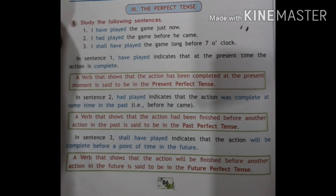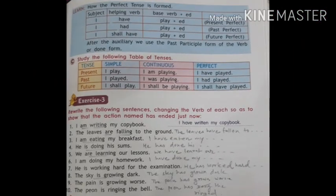Here we talked about the perfect tense in present, past, or future. See page number 87 and learn this table — how the perfect tense is formed. Subject + helping verb + base verb + -ed (past participle). First: 'I have played.' Second: 'I had played.' Third: 'I shall have played.' After the auxiliary, we use the past participle form of the verb — the 'done' form.